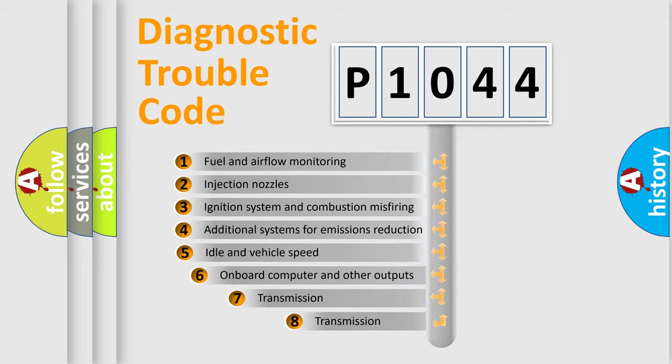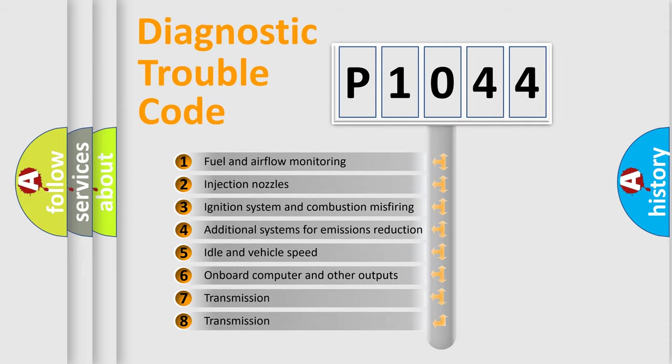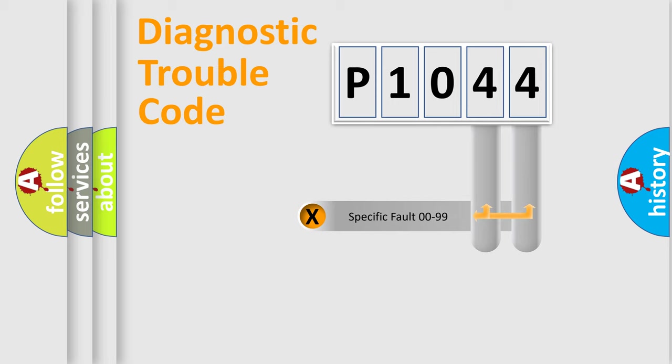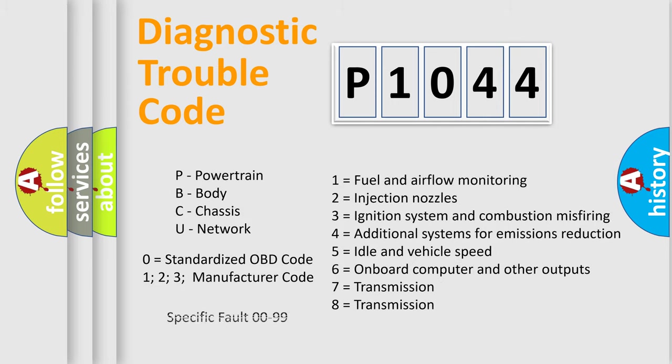The third character specifies a subset of errors. The distribution shown is valid only for the standardized DTC code. Only the last two characters define the specific fault of the group. Let's not forget that such a division is valid only if the other character code is expressed by the number zero.